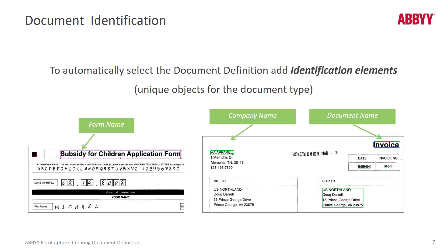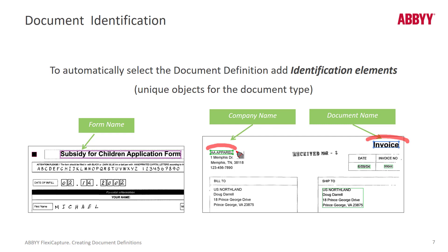There is a difference between fixed form document identification and semi-structured and unstructured. For fixed forms, very typically we will rubber-band a specific string in a specific area. We can accommodate cases where we can't read a few characters because of low quality, and that's OK. With semi-structured forms, it's a different approach — we still look for certain text strings, but in this case the text strings can actually occur anywhere. Unlike fixed forms, we're positionally agnostic.